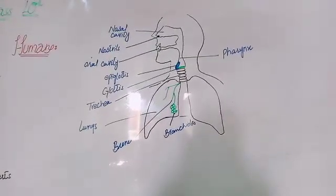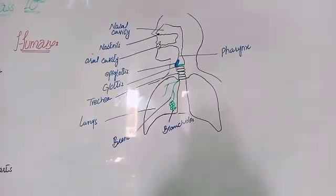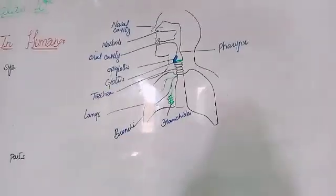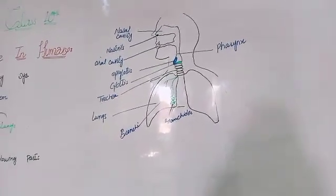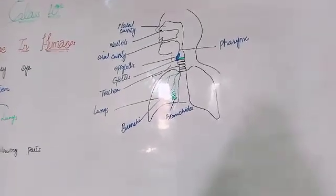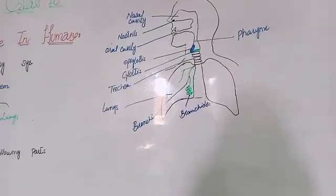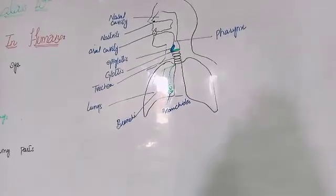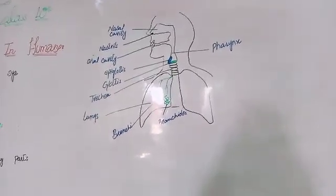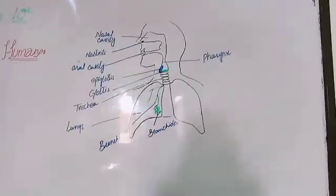Then the trachea is located in the chest cavity. The trachea also has cartilage rings in C-shape. The trachea then divides into bronchi.